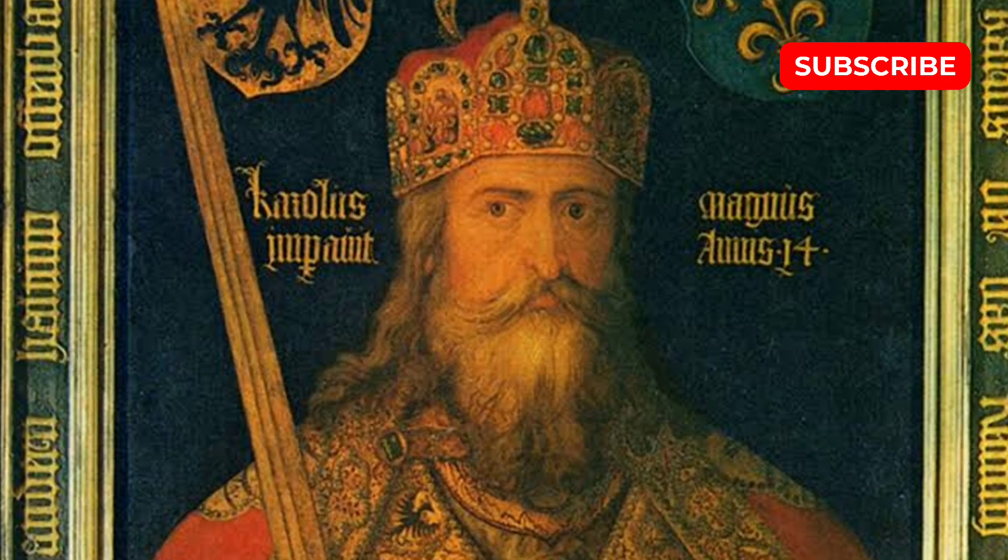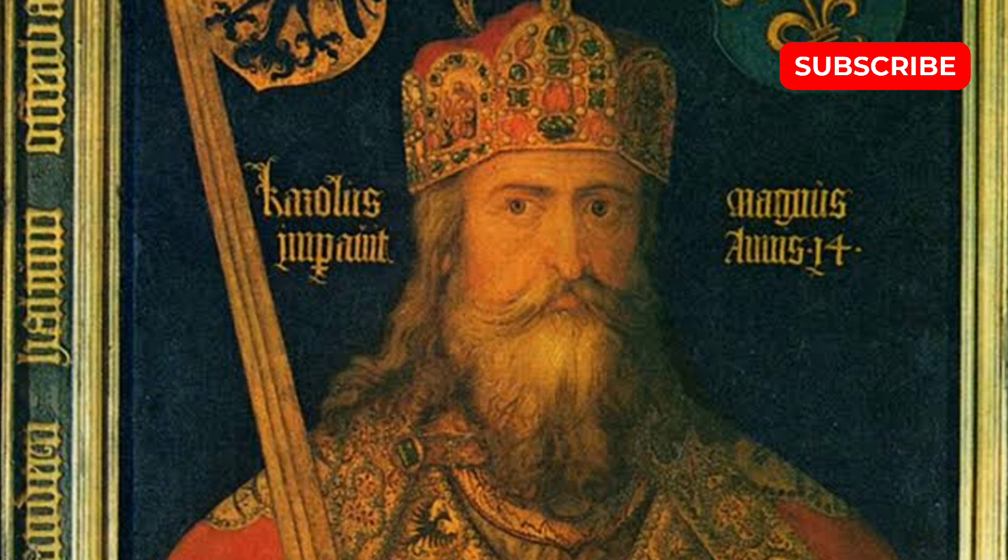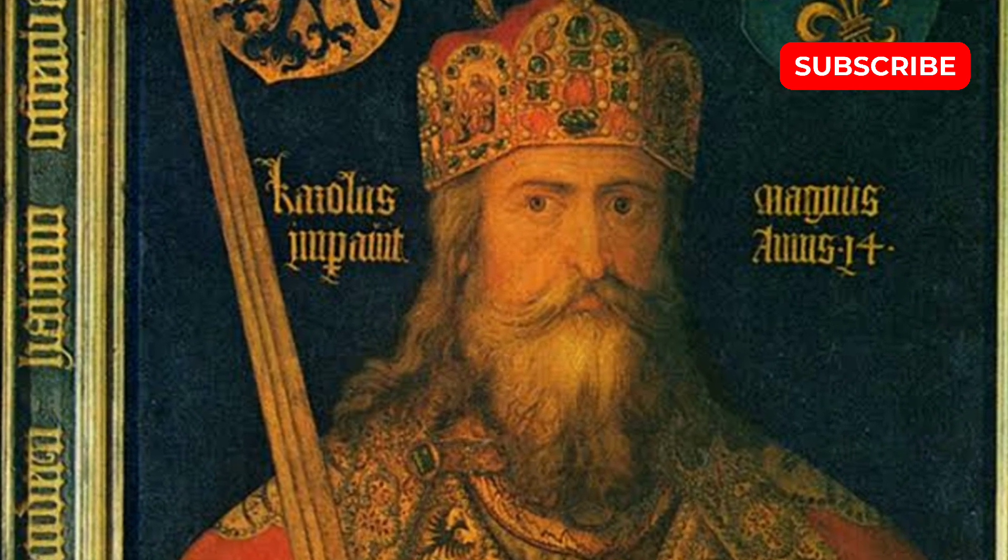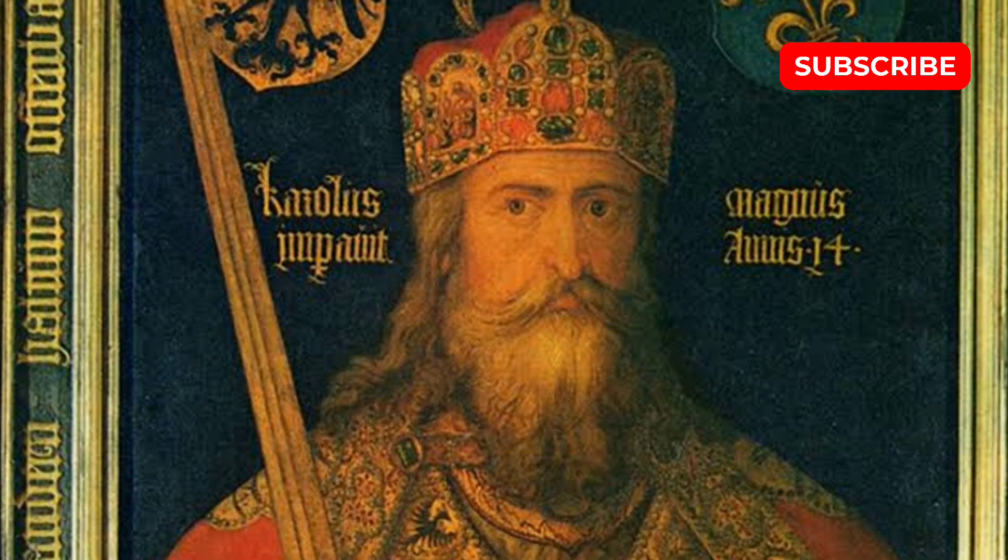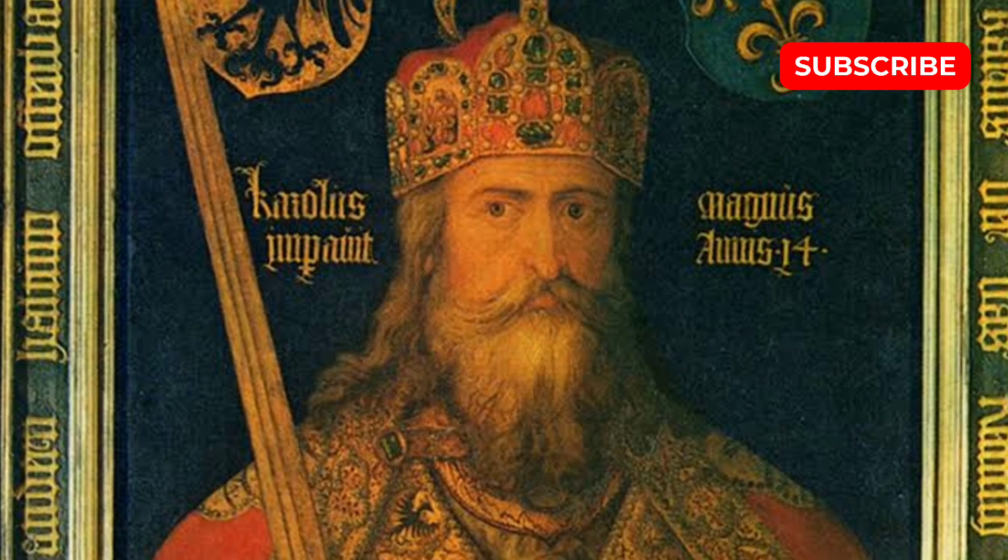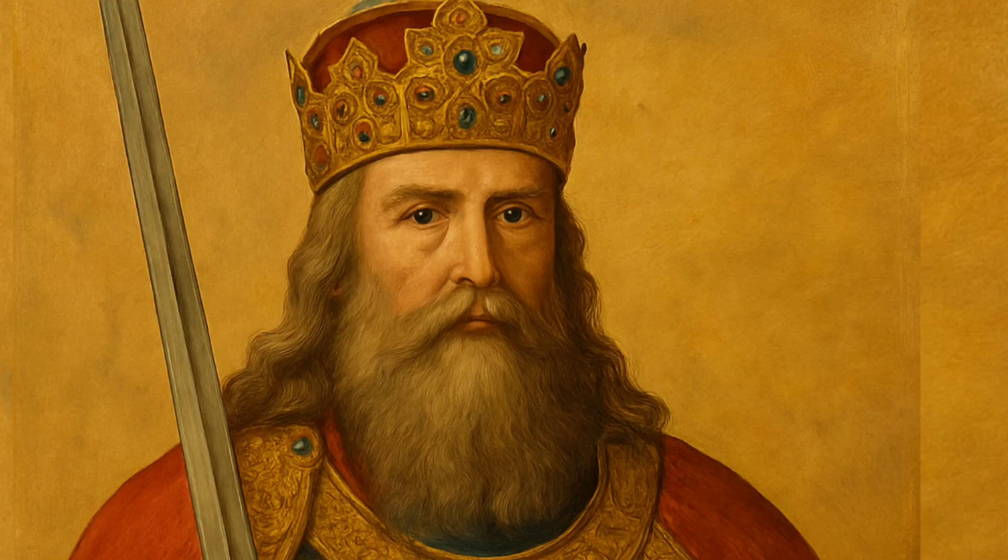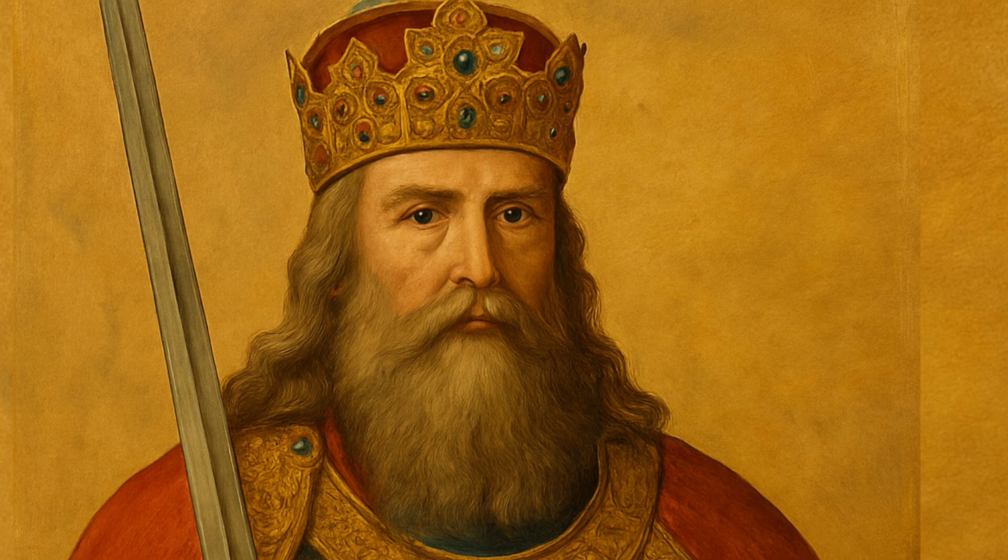Charlemagne ruled over most of what is now France, Germany, Belgium, the Netherlands and parts of Italy and Spain. Because of this, historians often call him the father of Europe. After his death his empire was divided, but his many children and grandchildren went on to form the basis of many royal families in Europe. So if we want to study whether modern people with European ancestry are connected to medieval royalty, Charlemagne is a very good example to start with.